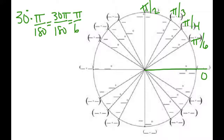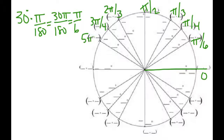Continuing around: 120 degrees is 2 pi over 3, then 3 pi over 4, then 5 pi over 6, and then pi. So if you think about it, 90 degrees — which is pi over 2 — is half a pi, because 180 degrees is a whole pi.